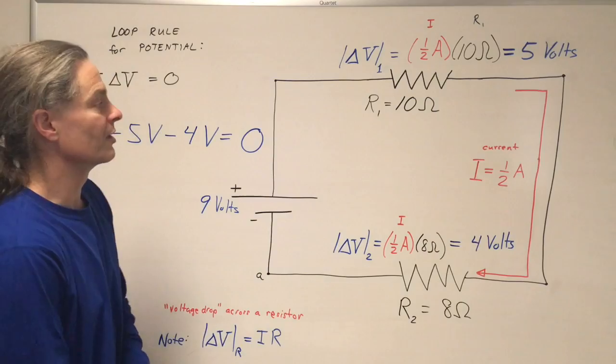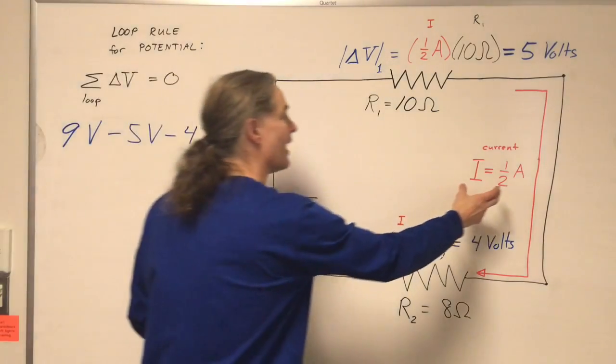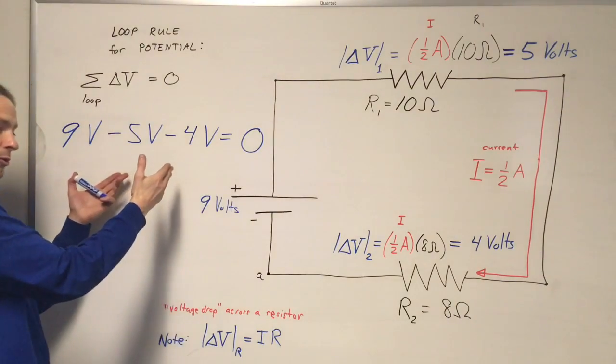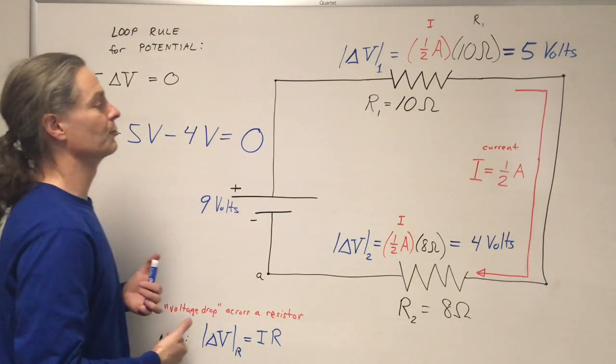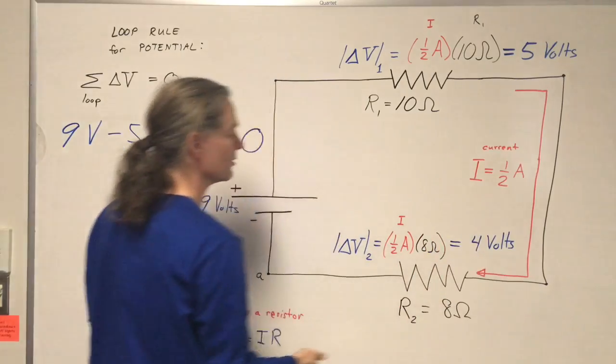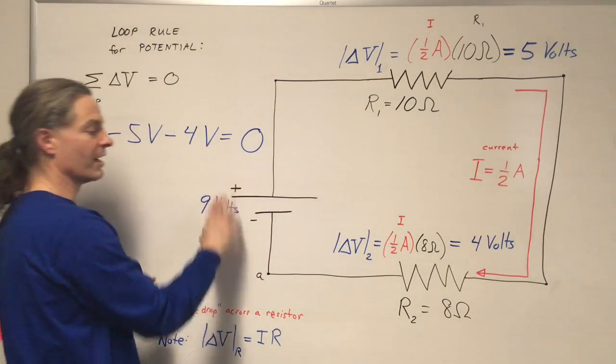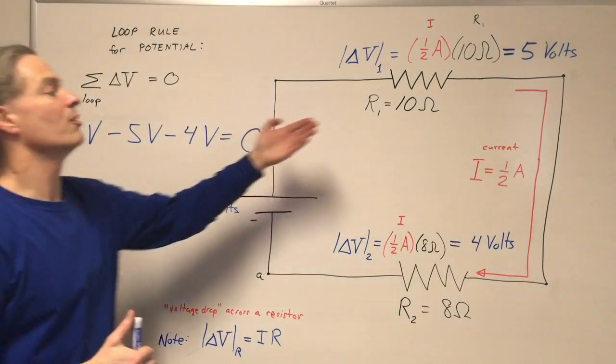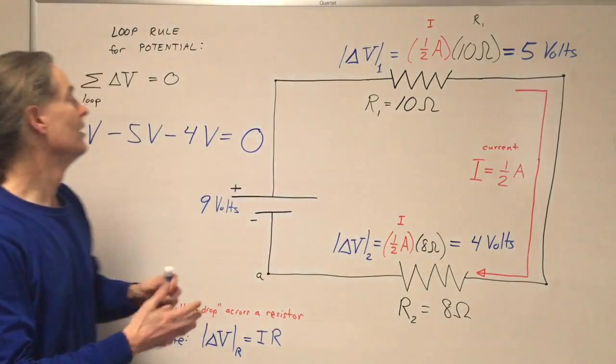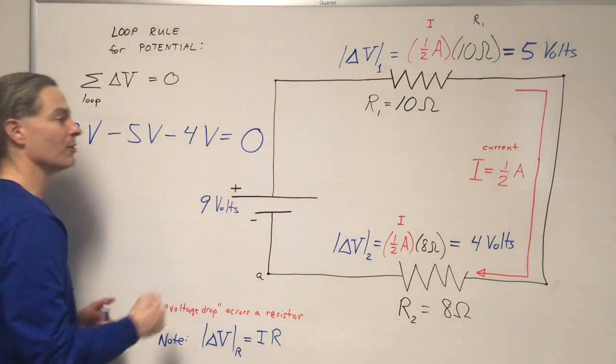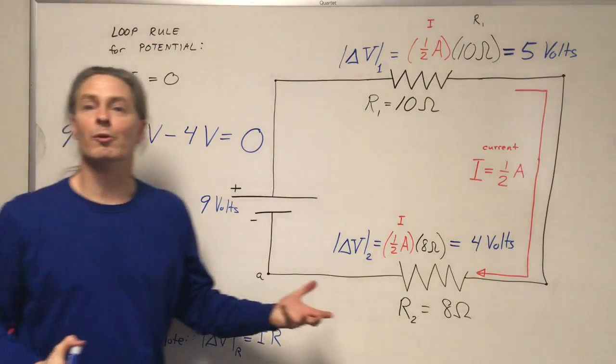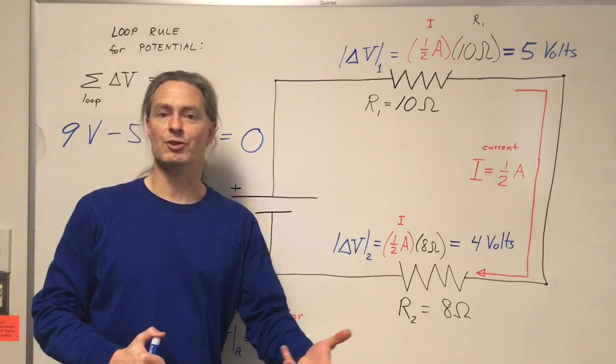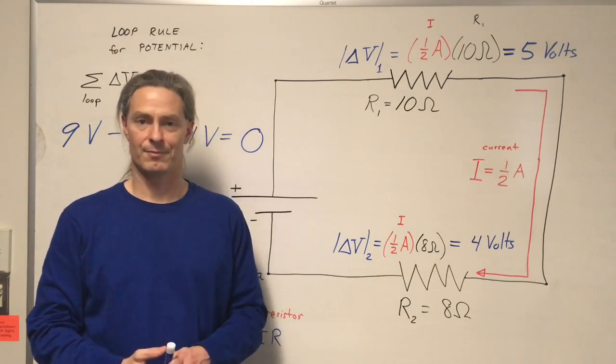Really, we would work these things in reverse. To actually figure out the electric current, I would use the loop rule or something equivalent given this 9 volt battery and these resistances. All I've done is assume we've already found the electric current and shown what I mean by applying the loop rule. We will apply the loop rule in more complicated problems in future classes and examples. Thank you.